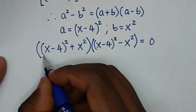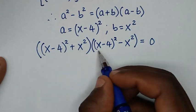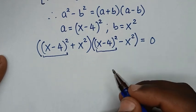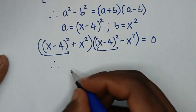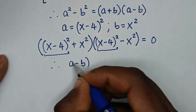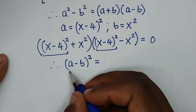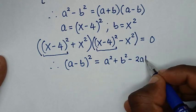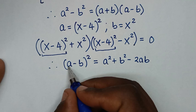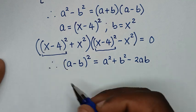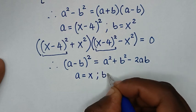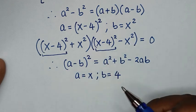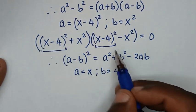In the next step, (x minus 4) bracket squared appears in both factors, and it is in the form of (a minus b) bracket squared. We'll apply the expansion rule: (a minus b) squared equals a squared plus b squared minus 2ab. Comparing: a equals x and b equals 4. So from both parts we'll apply this expansion form.